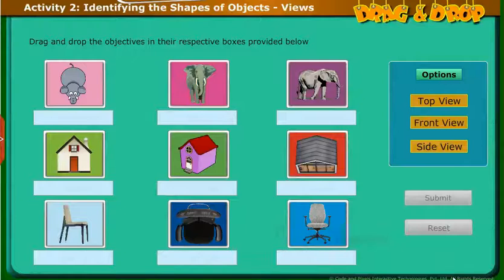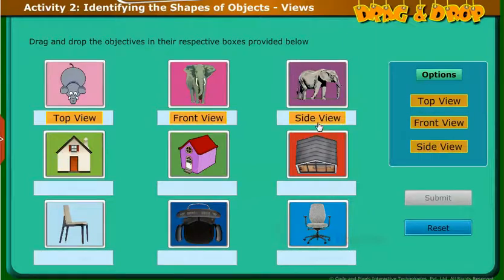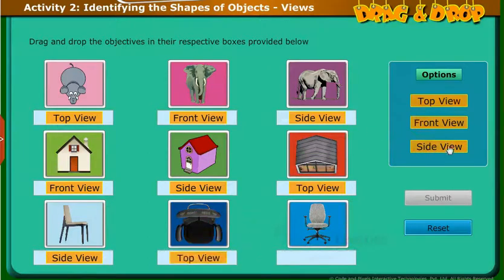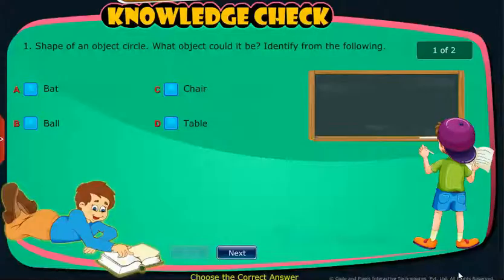Now we will do an activity on identifying the shape of objects in different views. Knowledge check: attempt the following questions to check your understanding.